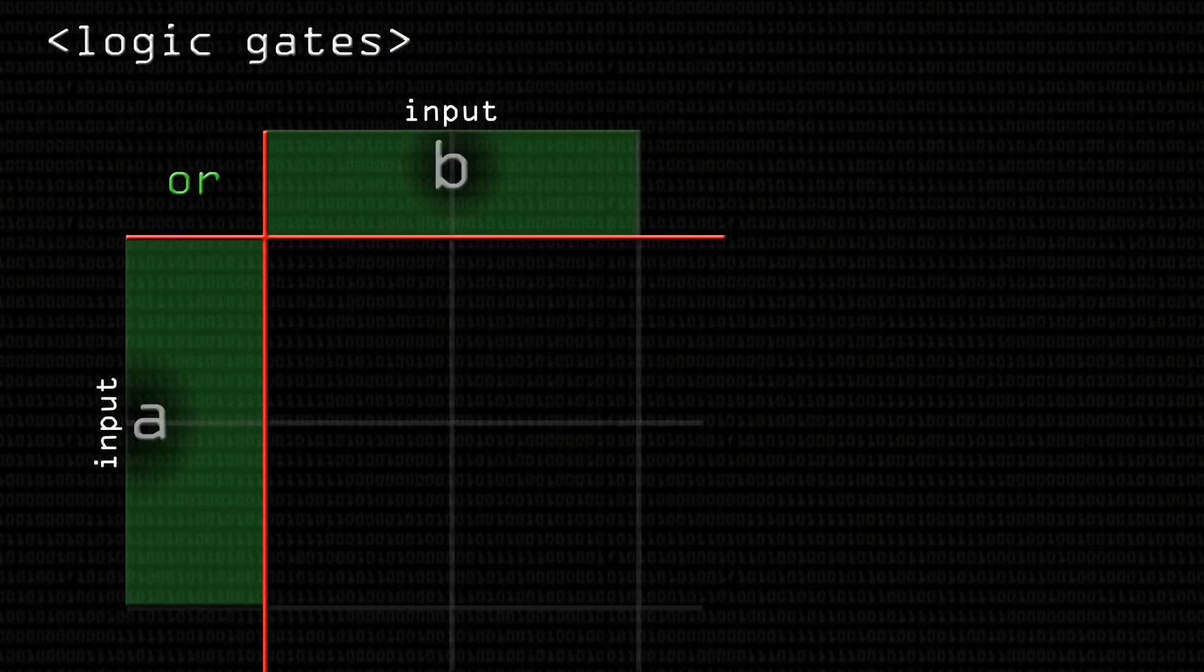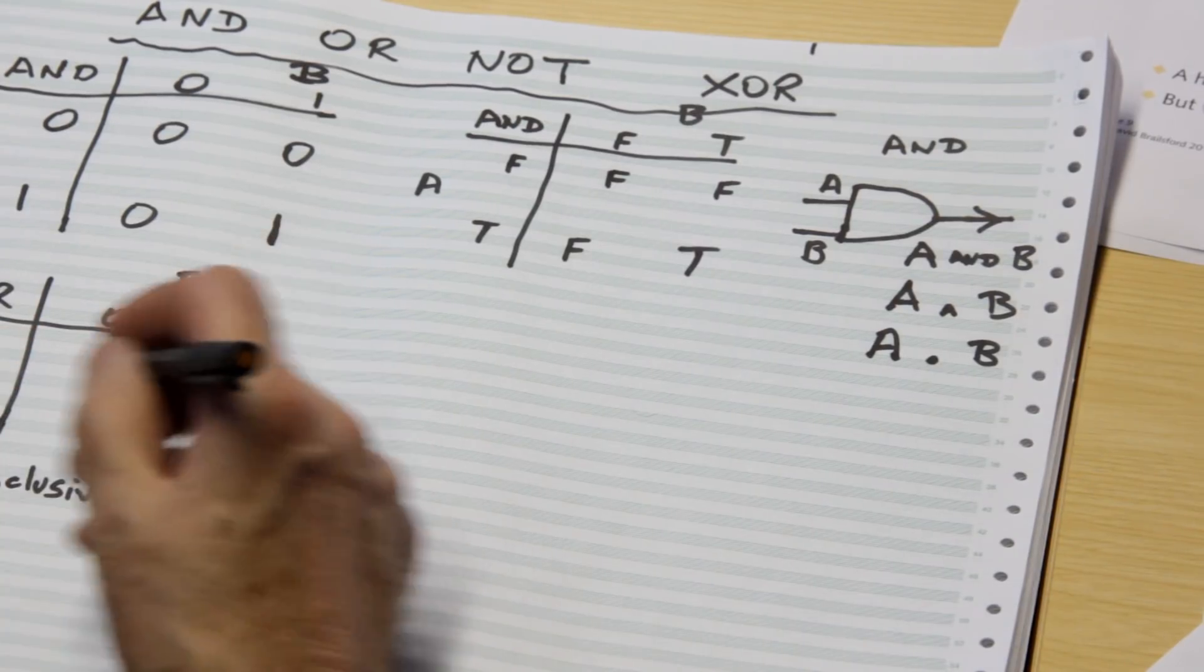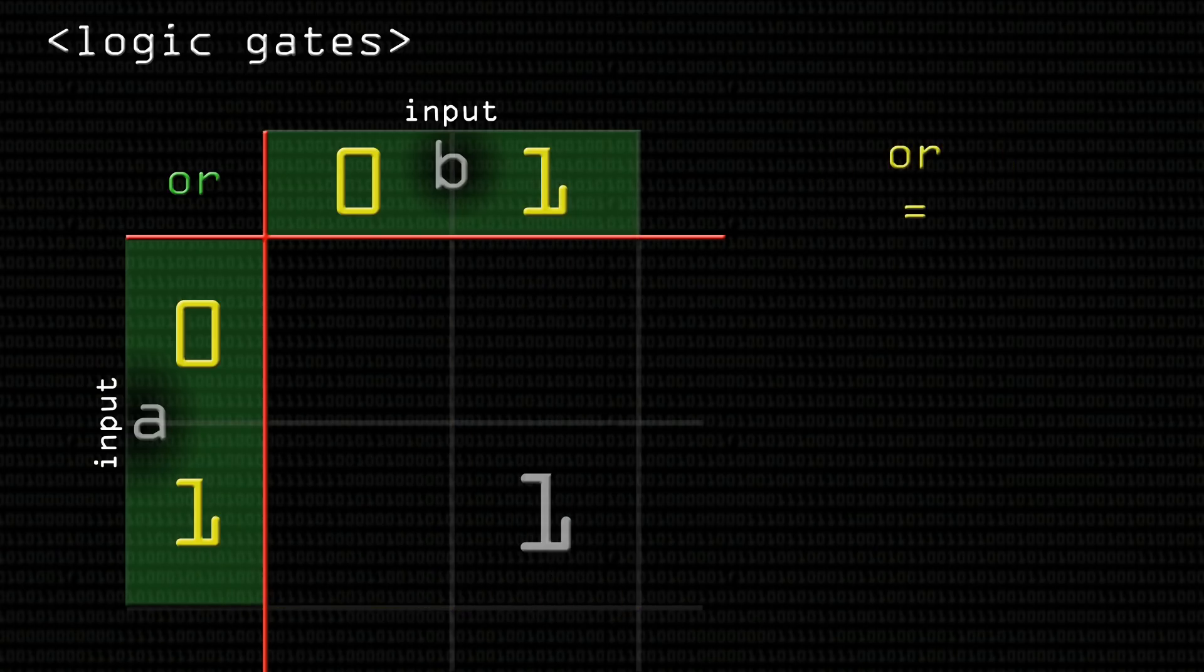Let's take a look at the OR gate. Well, for this, which is the so-called inclusive OR if you want to give it its full name, the rule is that the outcome is true if either or both of the inputs are true. 1 inclusive OR with 1. 1 or 1? Well, they're both true, so the outcome's true.